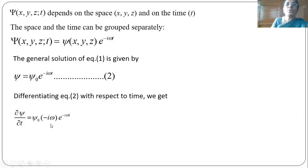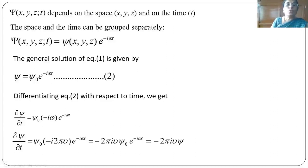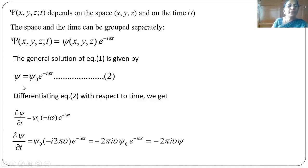We know omega ω is the angular frequency, which is equal to 2π nu. Substituting omega in this expression, we get ∂psi/∂t = psi₀ · (−i · 2π nu) · e^(−iωt). Separating out, −2πi nu is a constant taken outside, and psi₀ · e^(−iωt) is psi — the solution of the equation. So this first-order differential equation becomes ∂psi/∂t = −2πi nu · psi.